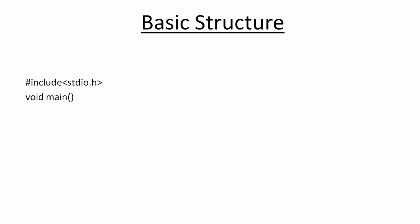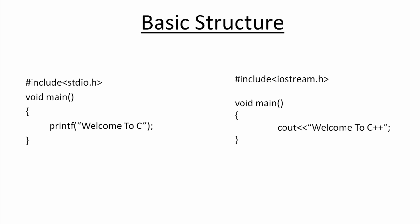Let's see the basic structure of these programming languages. In C, we include the stdio.h header file in order to make use of printf and scanf functions. Execution starts from main both in C and C++, and we use printf to output some value. In C++, we use the iostream.h header file, and instead of printf we make use of the cout object. The two less-than symbols are called the insertion operator — it is an insertion operator function.